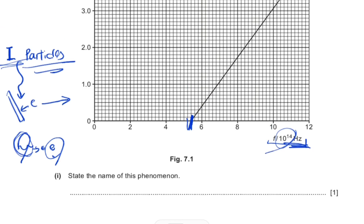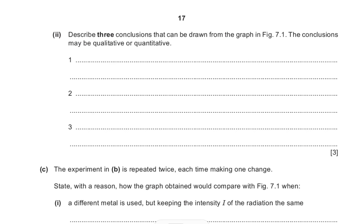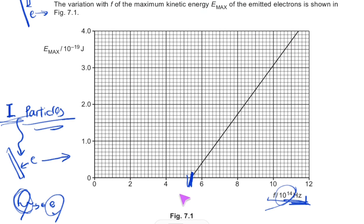We know this phenomenon is called the photoelectric effect. Now for the key question: describe three conclusions that can be drawn from this graph. The conclusions can be qualitative or quantitative — stating the laws surrounding the photoelectric effect as well as specific numerical values. When thinking about quantitative values, the work function should come to mind first, as it can be derived directly from the graph.